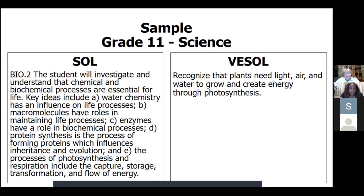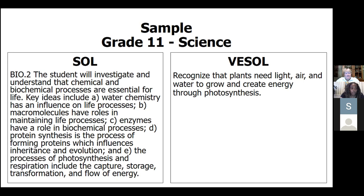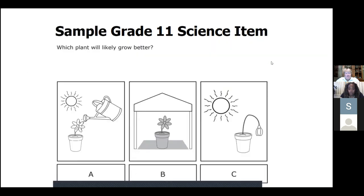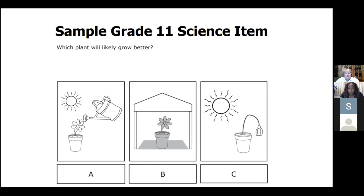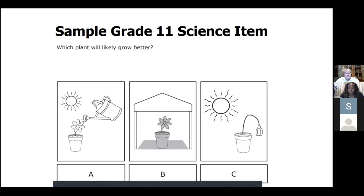For grade 11 science, the biology SOL 2 went through the essentialization process and was narrowed down to recognizing that plants need light, air, and water to grow and create energy through photosynthesis. What this looks like as a test item: with pictorial support showing three pictures, the stem asks 'which plant will likely grow better?' with answer choices A, B, or C. That is just a snapshot of what items would potentially look like with the new test.